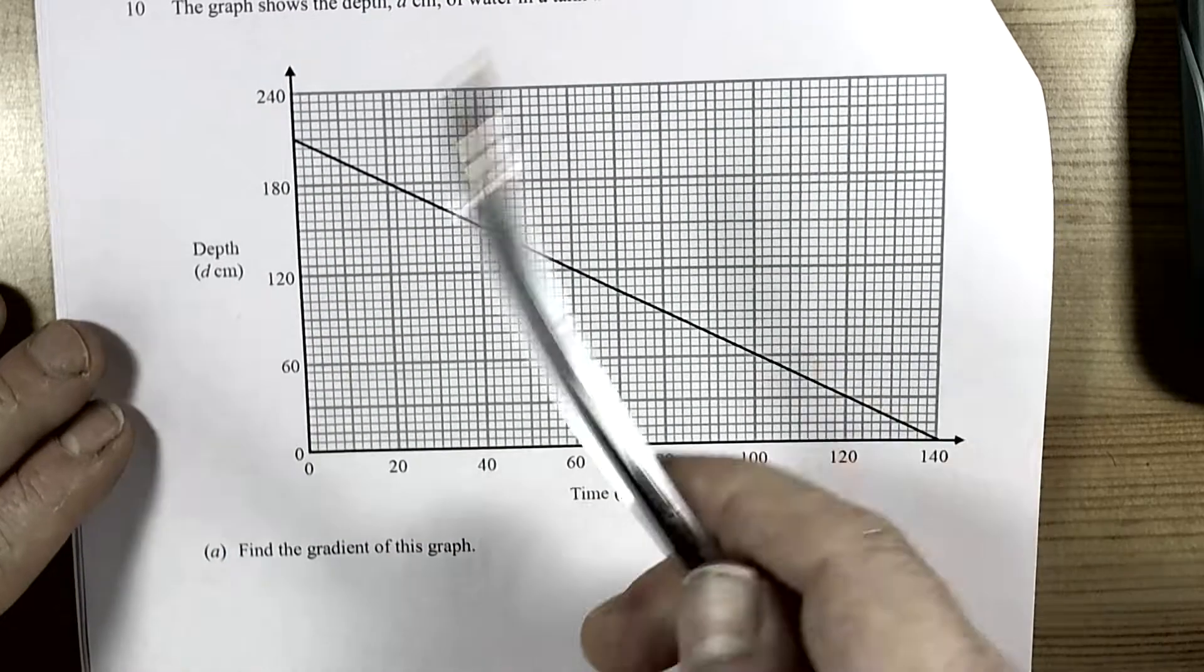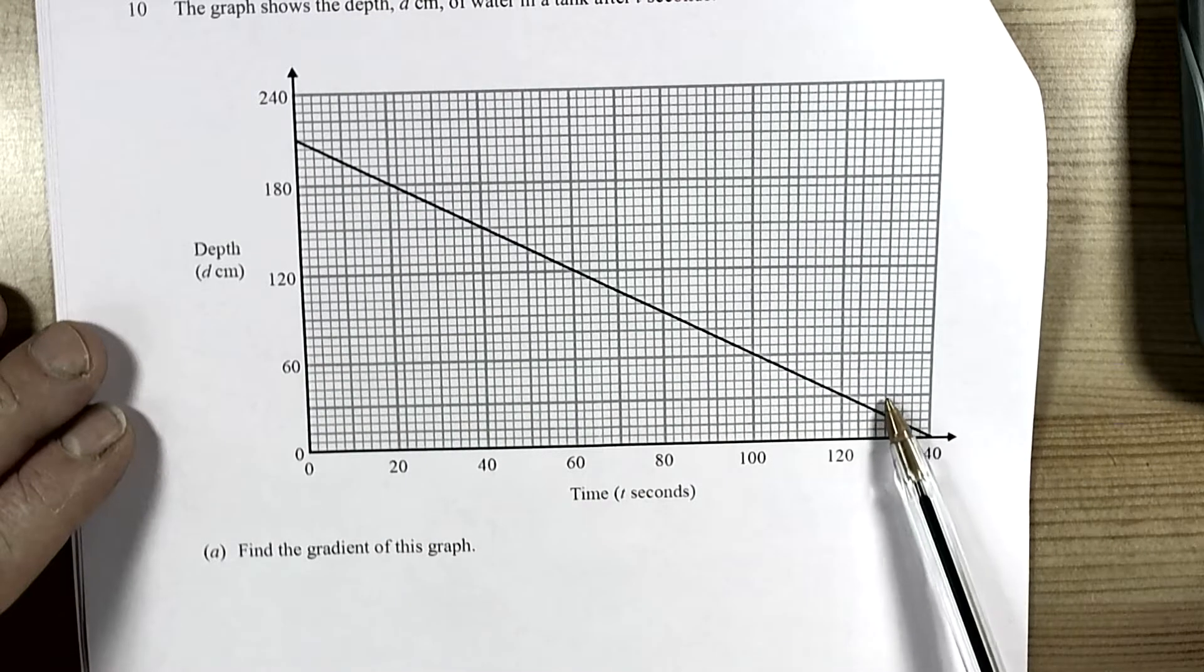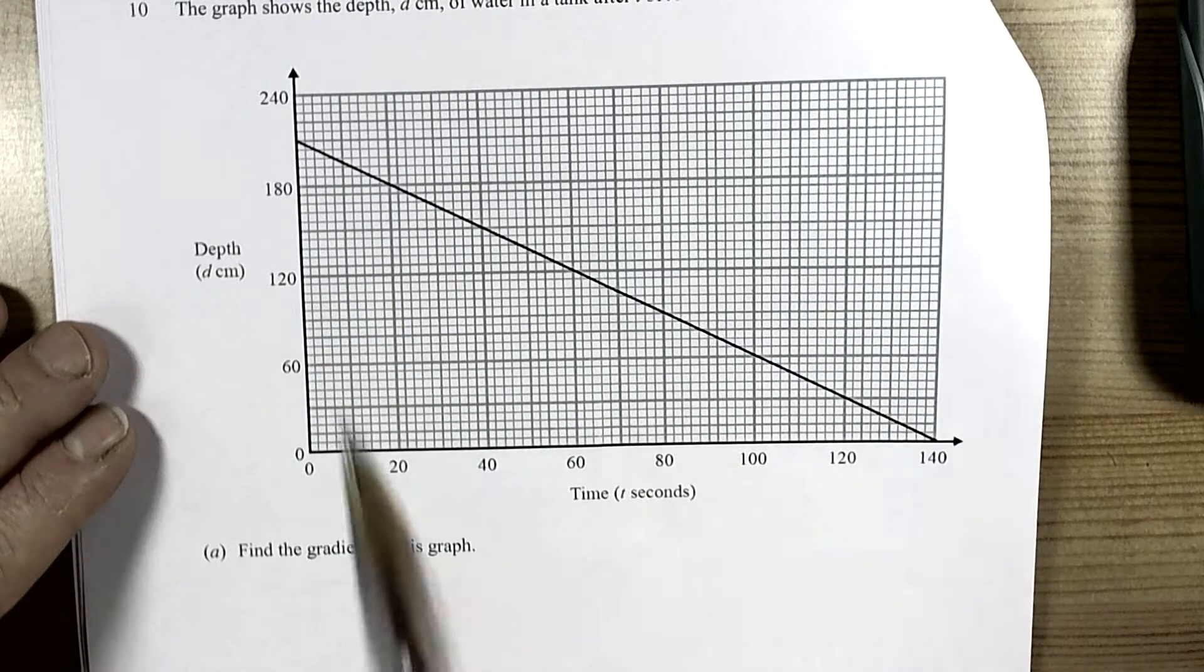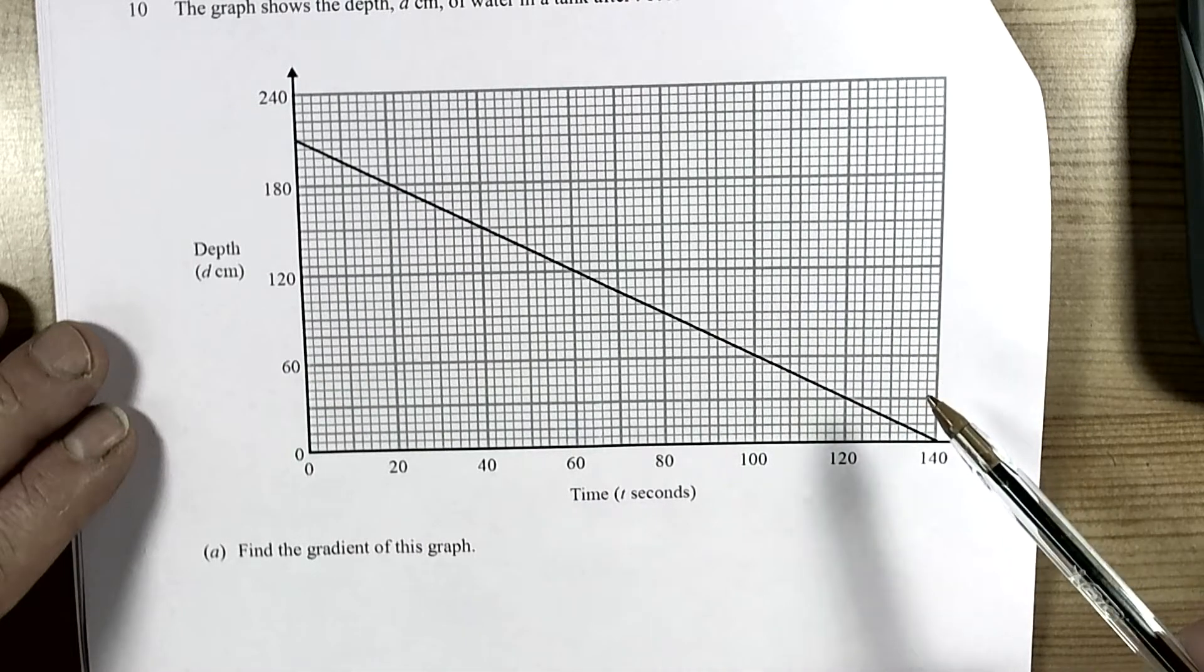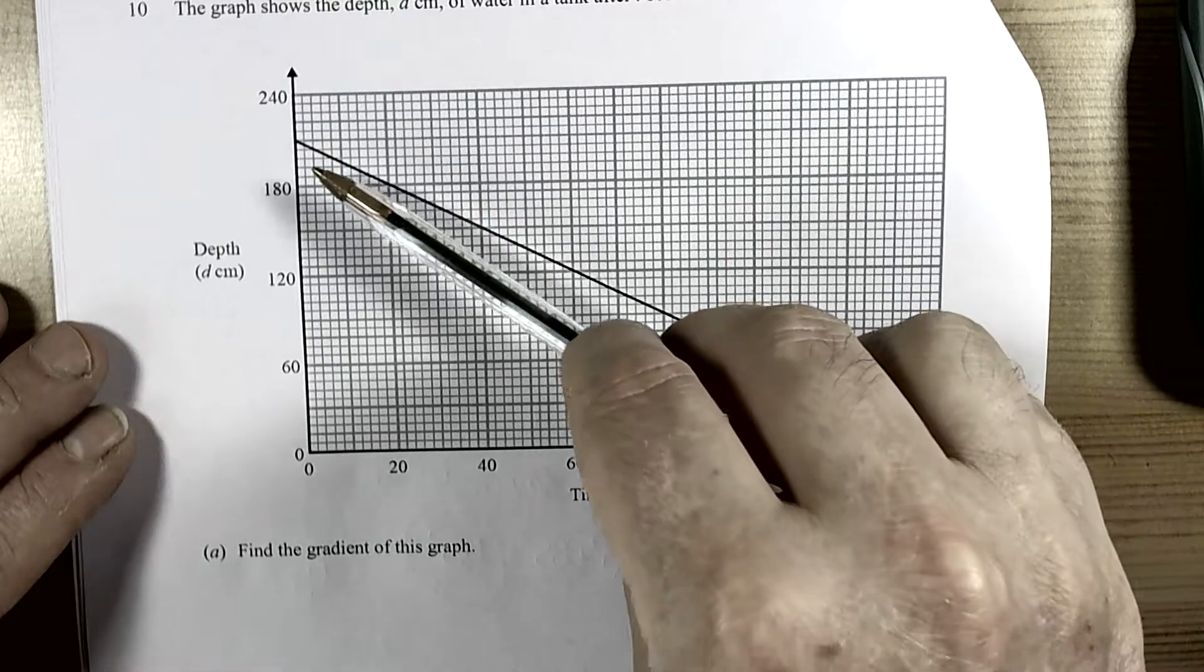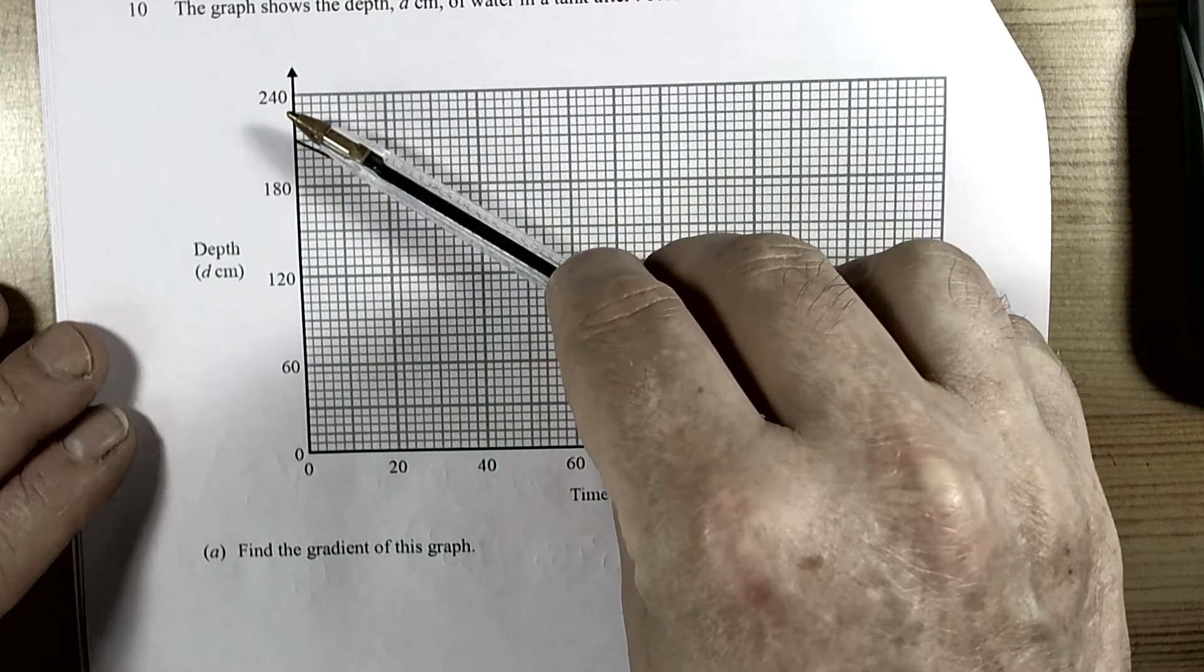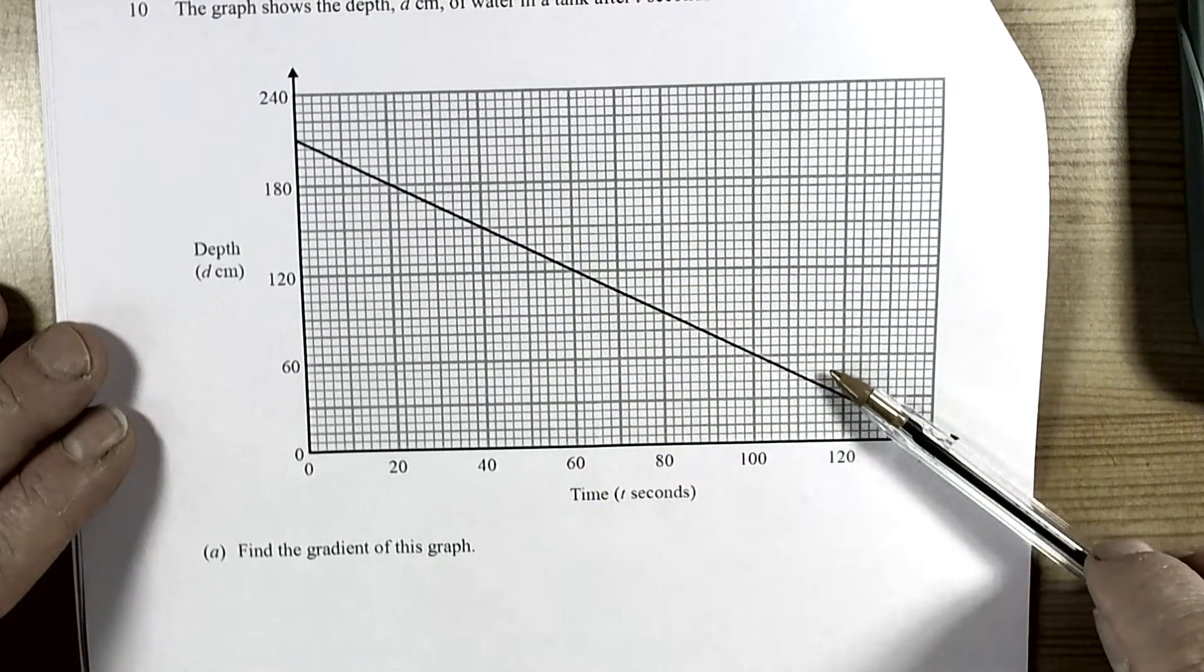This question talks about a graph showing the depth of water in a tank after t seconds. Probably a little tap being opened and the water is leaving at a constant rate. So it's probably a rectangular base tank or a circular base tank, a cylinder. Just a constant rate is happening here because it's a straight line.